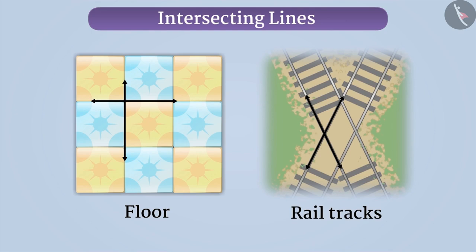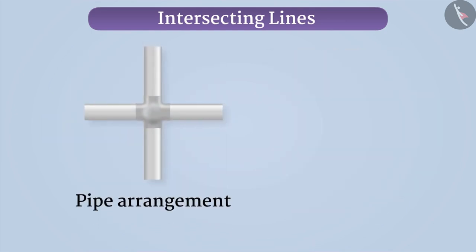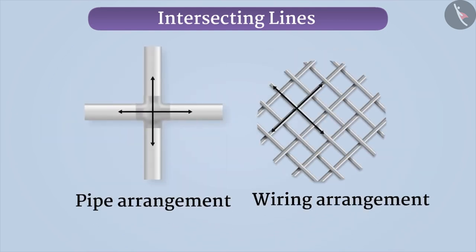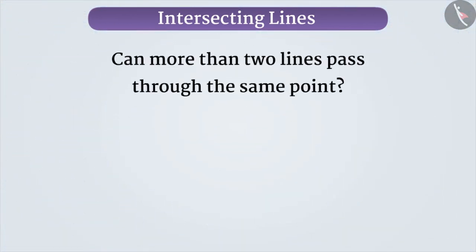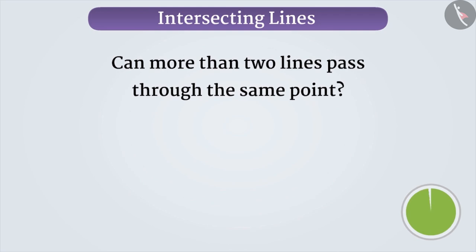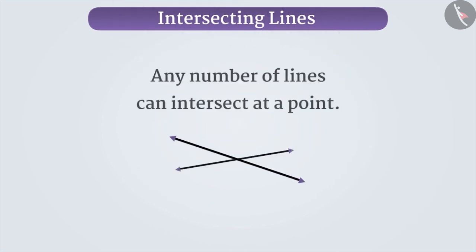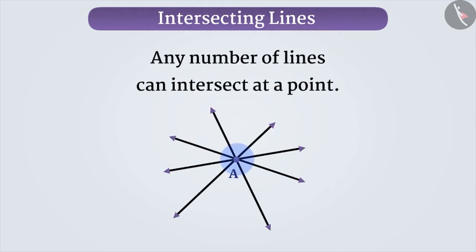Similarly, you can see the intersecting lines in the arrangement of pipes, arrangement of wires, etc. Now tell me, can more than two lines pass through the same point? Think for a while. You are right. Any number of lines can intersect at a point.